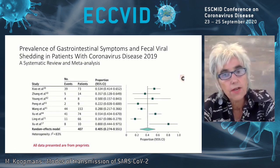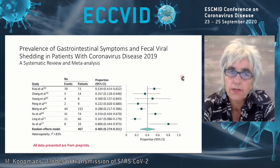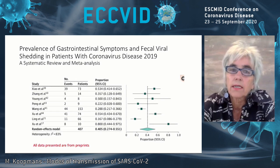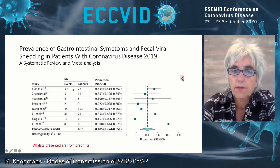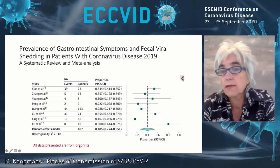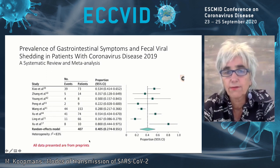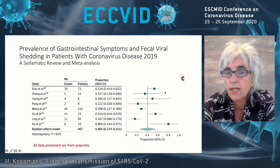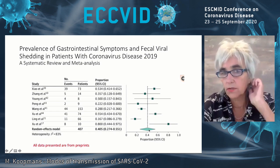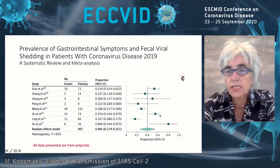If you look at what is the further evidence for fecal shedding and prevalence of GI symptoms in patients with coronavirus disease, here's data from a meta-analysis — and this is a meta-analysis of data from preprints, which is how this field is evolving. Studies so far settle around 40% of people also having GI syndrome, confirmed with fecal shedding. But as you can see, the estimates vary quite widely.